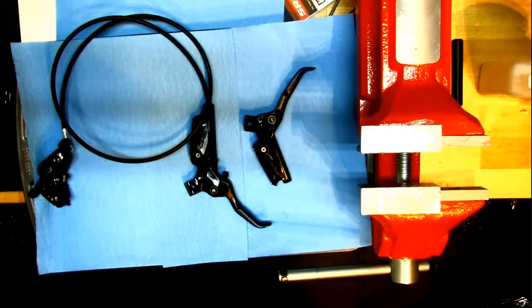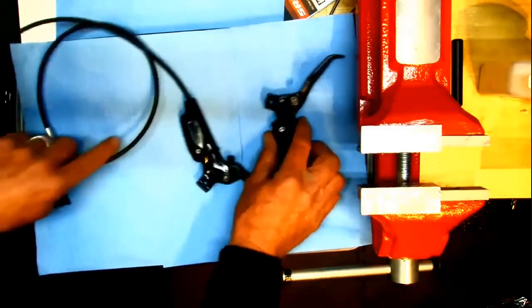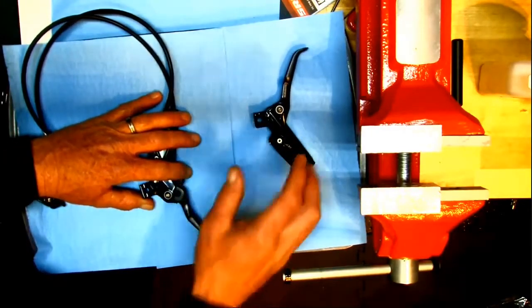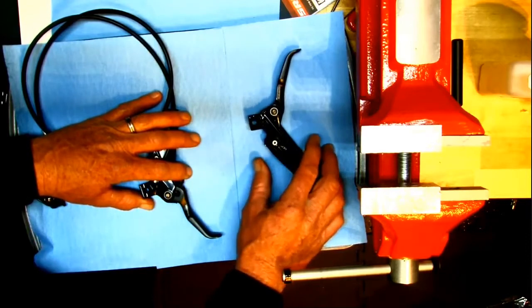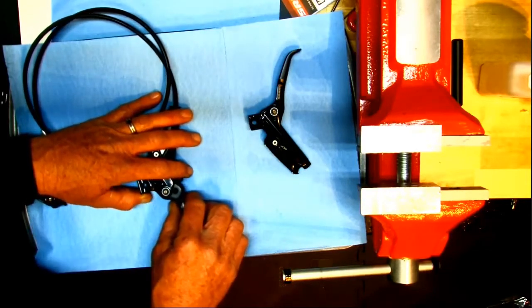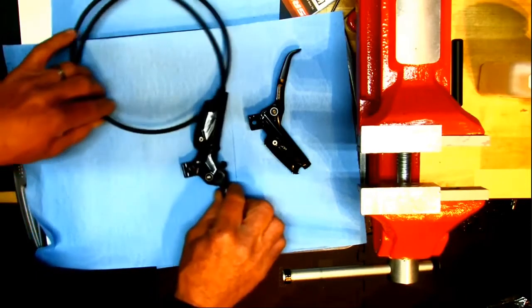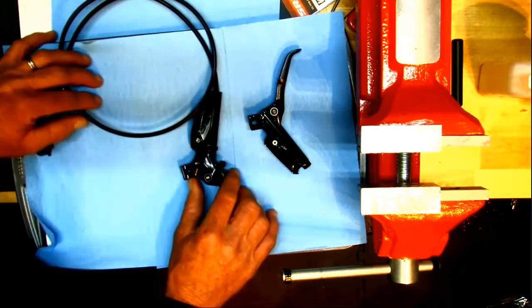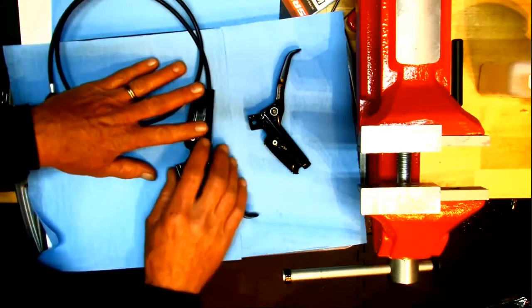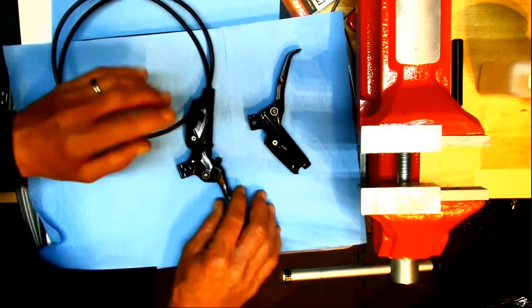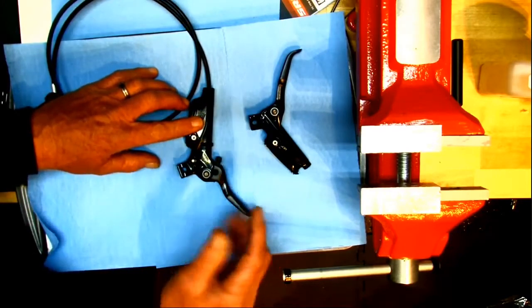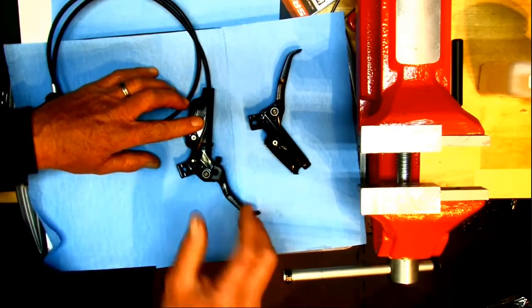So we're back in action. Level series brakes are really one of the only things around where we have to take away features to lower that price. While an XX1 and a GX groupset all have pretty much the same features, the G2 you're going to get more features as you go up.